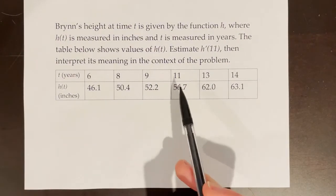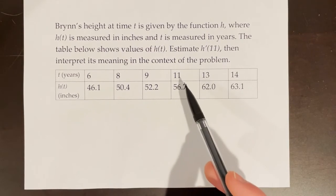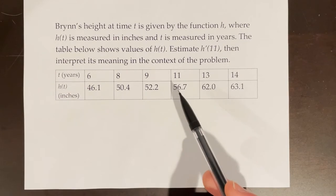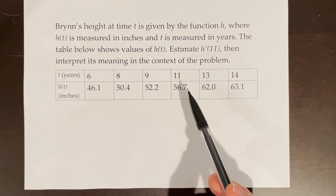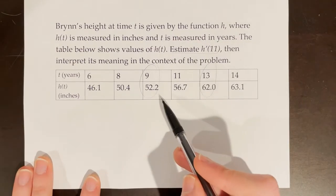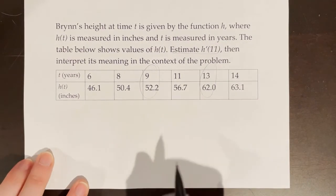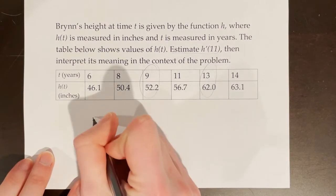Unfortunately, there's not much that I can do because I'm still not given the actual function. And this would only be helpful if I was also given the actual function, because then I could apply my limit definition of the derivative. But it's only asking us to estimate h prime of 11. So I'm going to use the points on either side of t equaling 11. And I'm going to follow the same process for finding the average rate of change.